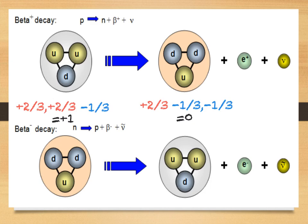As the charge after the decay is now less than the charge before the decay, a positive charge must have been given off. This is our positively charged electron — the positron. In our beta minus decay we start with a neutron which has an overall charge of zero, and it turns into a proton with a charge of plus one. As the charge after the decay is now more than the charge before the decay, we must have given off a negative charge. This is our negatively charged electron — our high energy beta minus particle.